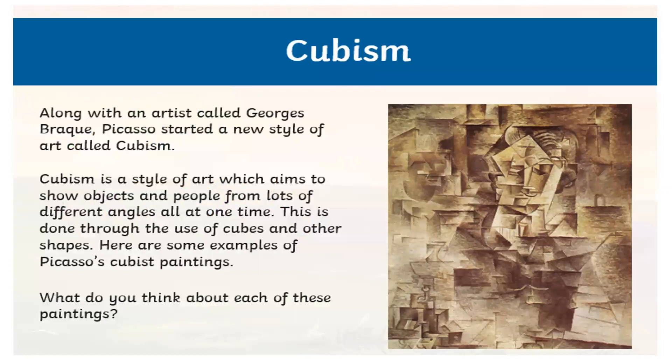Cubism. Along with an artist called Georges Braque, Picasso started a new style of art called Cubism. Cubism is a style of art which aims to show objects and people from lots of different angles, all at one time. This is done through the use of cubes and other shapes. Here are some examples of Picasso's cubist paintings.